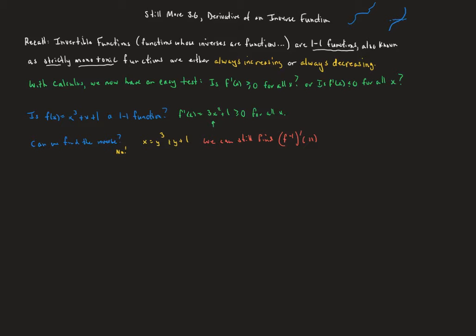First, let's do something we know how to do — where we can find the inverse and get the derivative — to see the important relationship between them. Consider f(x) = x³, whose inverse is the cube root of x. If we wanted to find the derivative of the inverse at 8, we apply the power rule to x^(1/3), getting (1/3)x^(−2/3), which we can write as 1 over 3 times the cube root of x squared.